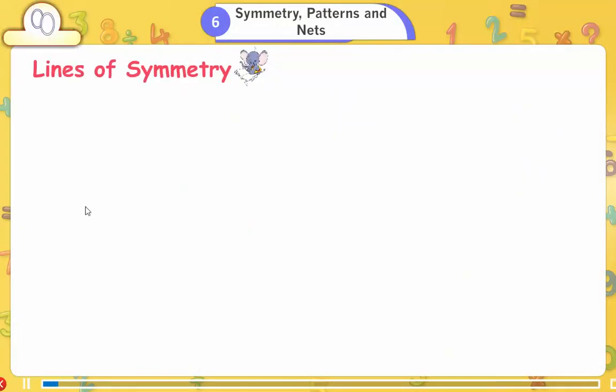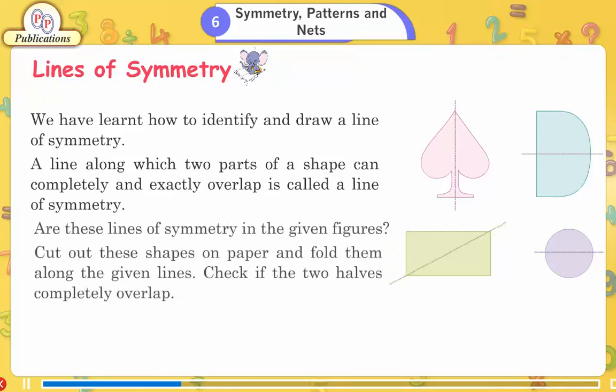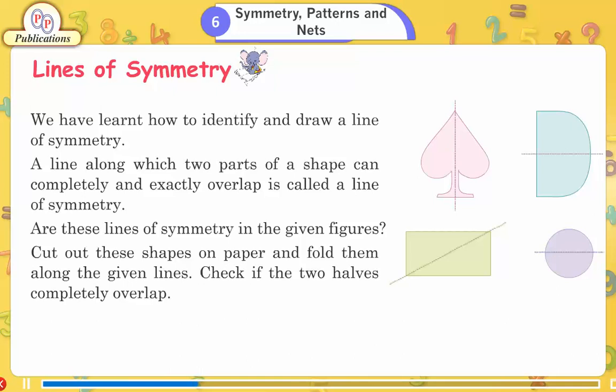Lines of symmetry. We have learnt how to identify and draw a line of symmetry. A line along which two parts of a shape can completely and exactly overlap is called a line of symmetry. Are these lines of symmetry in the given figures? Cut out these shapes on paper and fold them along the given lines. Check if the two halves completely overlap.